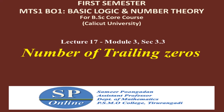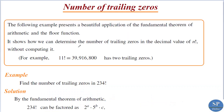In this lecture we are going to discuss an application of the fundamental theorem of arithmetic which can be used to find the number of trailing zeros in the factorial of a number. We can use the fundamental theorem and the floor function to determine the number of trailing zeros in the decimal value of n factorial.